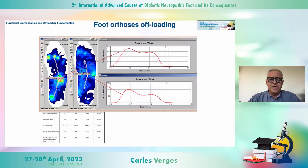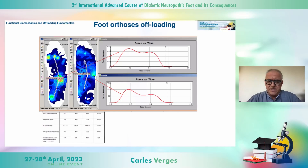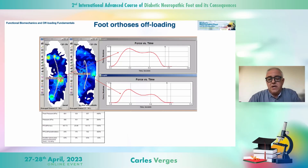In the left image, you can see the foot walking without the orthotic. On the right, you can see the same foot at the same moment but using the orthotic shown previously. In the area of higher pressure, you can see how the pressure is really reduced, going from almost 700 kilopascals down to 100 kilopascals. It's very interesting to check how the orthotic is really decreasing the pressure and, on the other side, not increasing pressure in other areas.